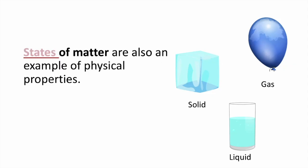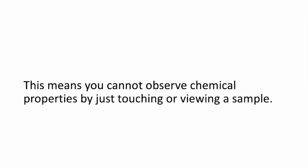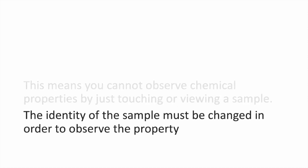And many others. The states of matter are also an example of physical properties. Chemical properties are the other type of property. They are characteristics of a substance that can be observed only by performing chemical reactions. This means you can't observe chemical properties by just touching or viewing a sample — the identity of the sample must be changed in order to observe the property.